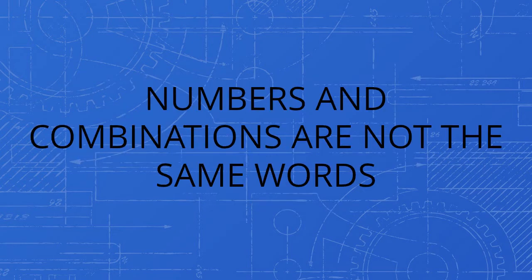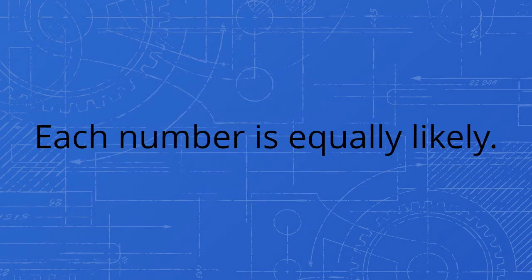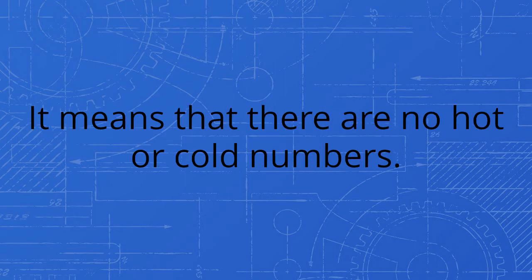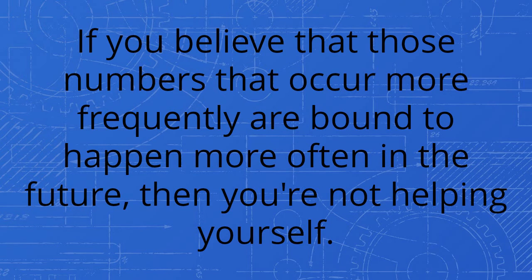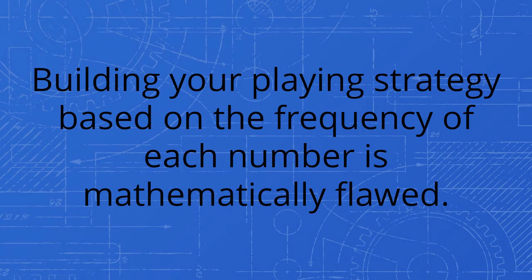Numbers and combinations are not the same words. Each number is equally likely. It means that there are no hot or cold numbers. If you believe that those numbers that occur more frequently are bound to happen more often in the future, then you're not helping yourself. Building your playing strategy based on the frequency of each number is mathematically flawed.